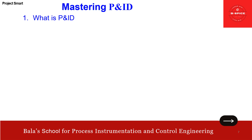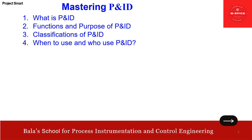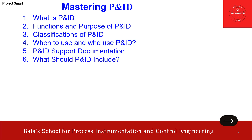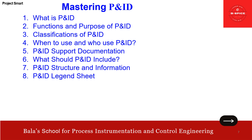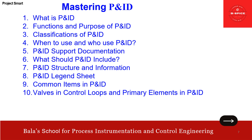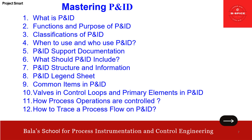One area is mastering P&ID — blue means already uploaded on our channel. Topics covered include: what is P&ID, functions and purpose, classifications, when and who will use it, P&ID support documentation, what P&ID should include, structure and information, the legend sheet, common items, valves in control loops, primary elements, how process operations are controlled, how to trace a process flow, and P&ID for instrumentation. These are covered in three volumes — parts one through three. You can watch and get benefited, and for questions you can come for a live chat.